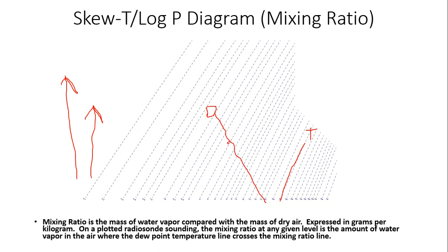To determine mixing ratio at a given level — say 700 millibars — find where the dew point line intersects the mixing ratio line at that pressure level. For example, if the dew point line intersects a mixing ratio line with a value of negative 4 degrees Celsius at 700 millibars, that would be the mixing ratio at that level.